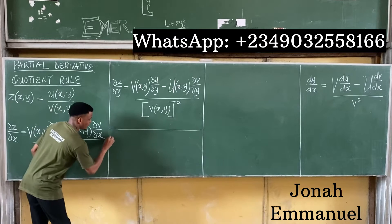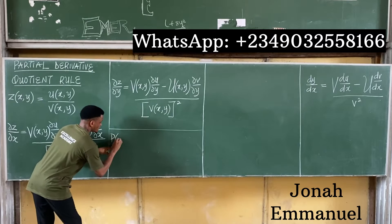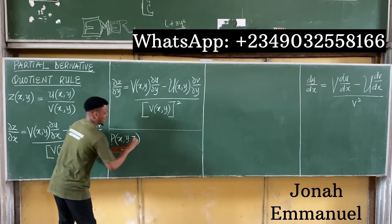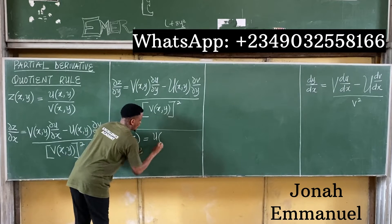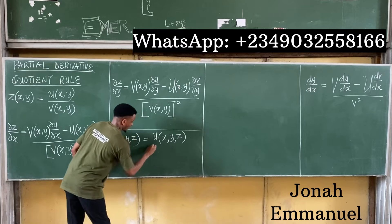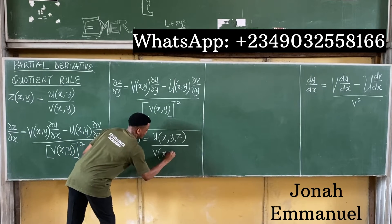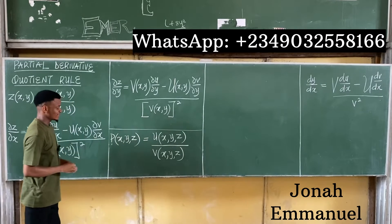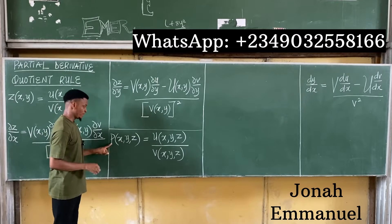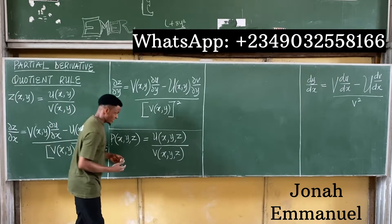Let's say I have a function p of three variables x, y, z, and this equals u(x,y,z) all over v(x,y,z). What would be my formulas for calculating the partial derivatives of p with respect to x, y, and z? Let's work this out.